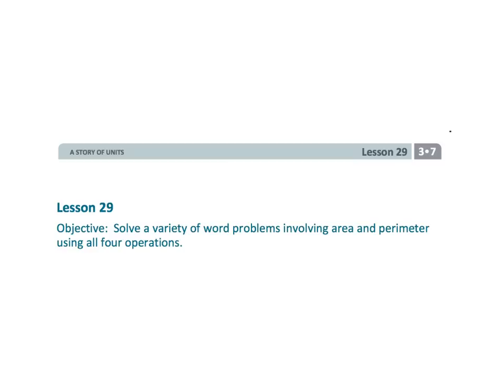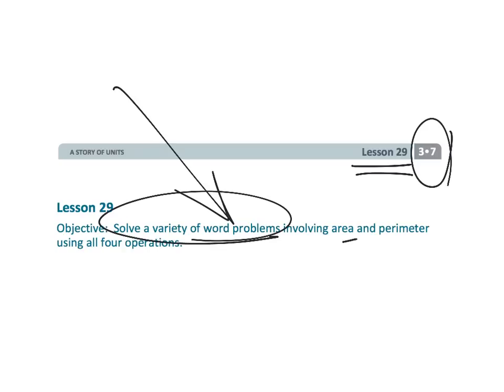And that wraps up third grade Module 7 Lesson 29, bringing it all home with some word problems to practice area and perimeter.